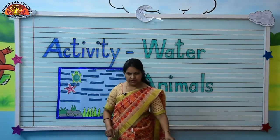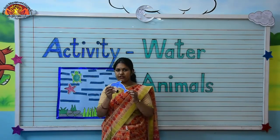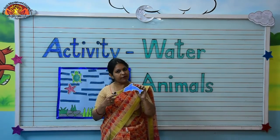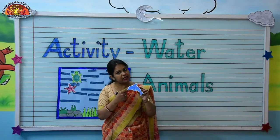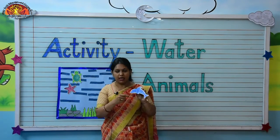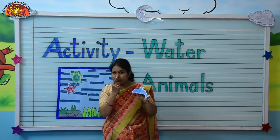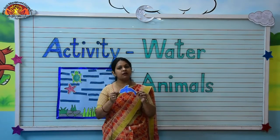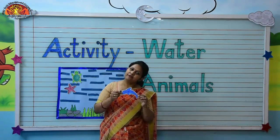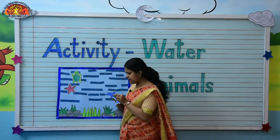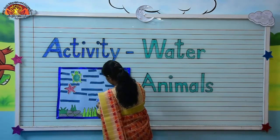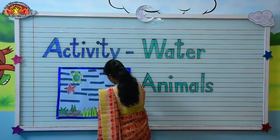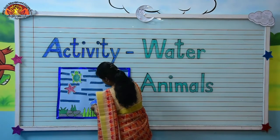Very good! Tell me kids, which water animal is this? This is a dolphin. It is blue in color and it has a long pointed nose. Dolphin is a friendly animal. Where should we paste it? Here. Very good, very nice, kids!